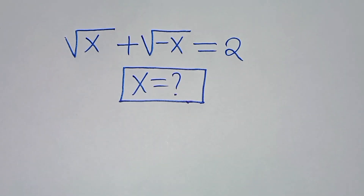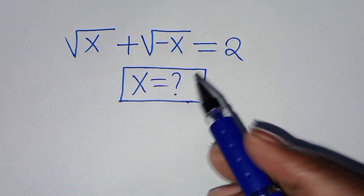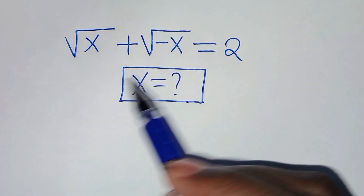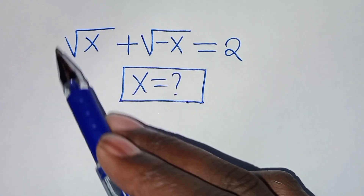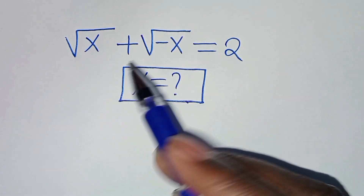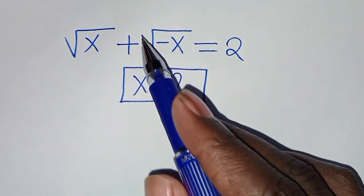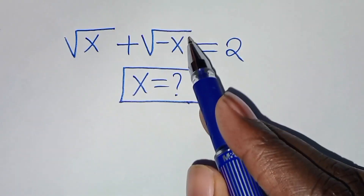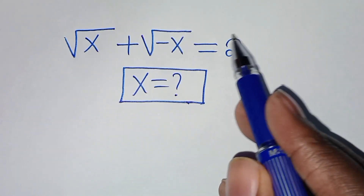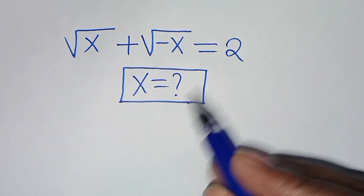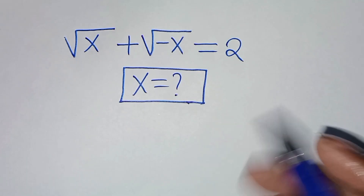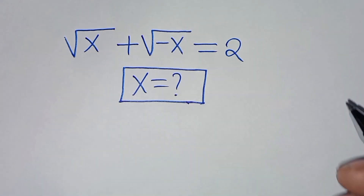Everyone, you are welcome to solve this nice algebra problem, which is the square root of x plus square root of minus x. This is equal to 2. So what is the value of x?